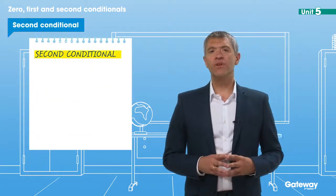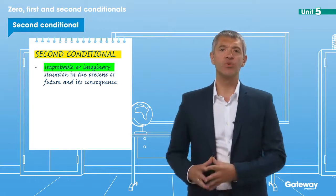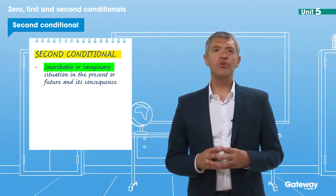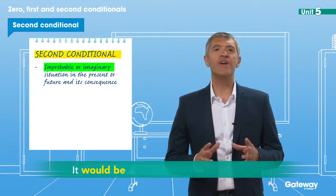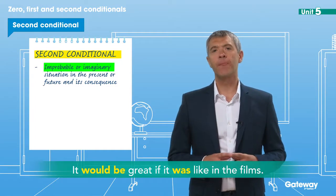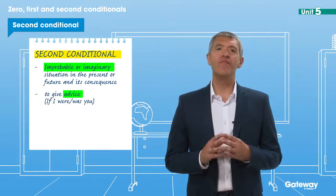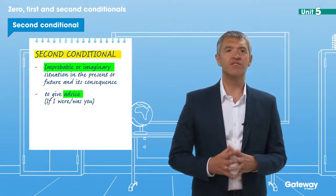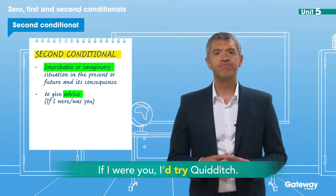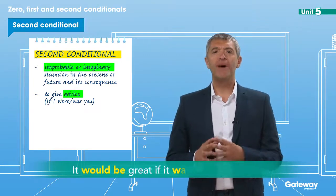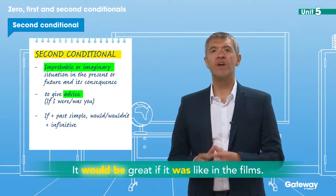The second conditional describes an improbable or imaginary situation in the present or future and its consequence. So imagine if you could play Quidditch on a flying broomstick like Harry Potter. It would be great if it was like in the films. We can also use the second conditional to give advice when we have 'if I were you' in one half of the sentence. For example, if I were you, I'd try Quidditch. To make the second conditional, we use the past simple in the half of the sentence with 'if', and 'would' or 'wouldn't' plus the infinitive in the other half.